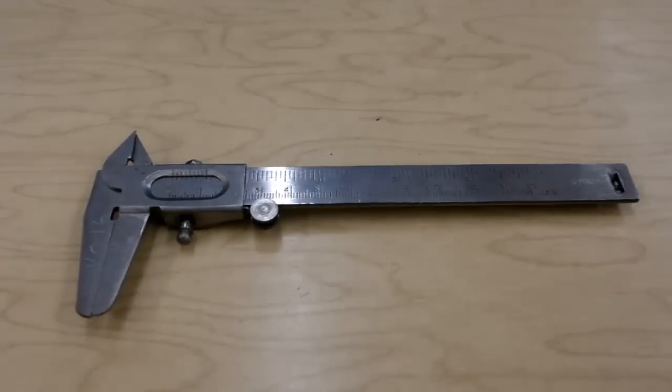It allows us to measure length down to a tenth of a millimeter, because as you know most rulers only go down to a millimeter precision, and this allows us to go one extra digit more precise than that.